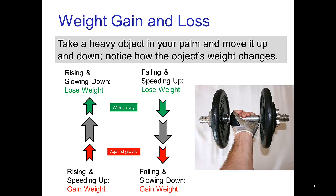Going against gravity would be if you're lifting it and speeding up. On the other hand, if you're lifting it but then slowing down, then you're going with gravity. If you throw a ball up into the air, when the ball is going with gravity, it's rising and slowing down. When the ball is falling, it naturally speeds up. So going with gravity, with the object in your hand, means you're lowering the object and speeding up.